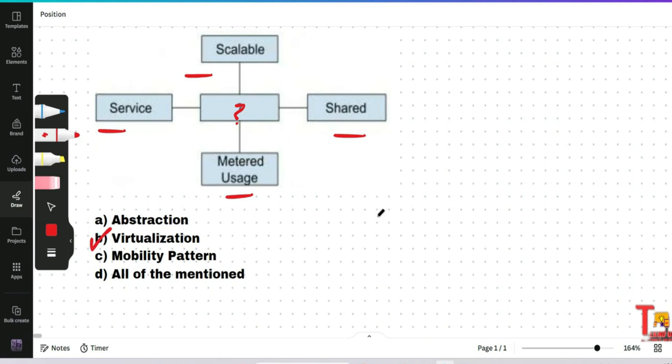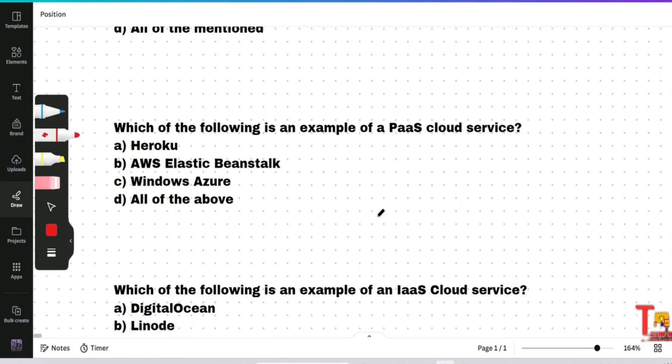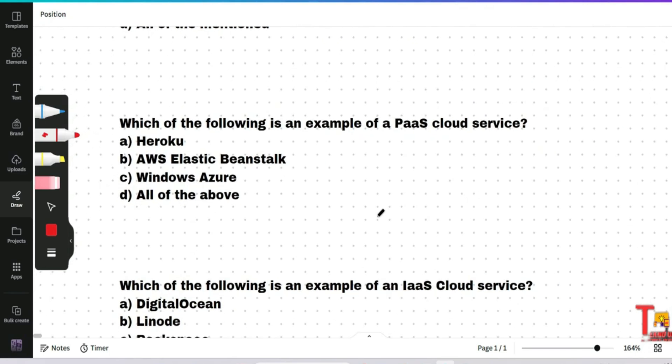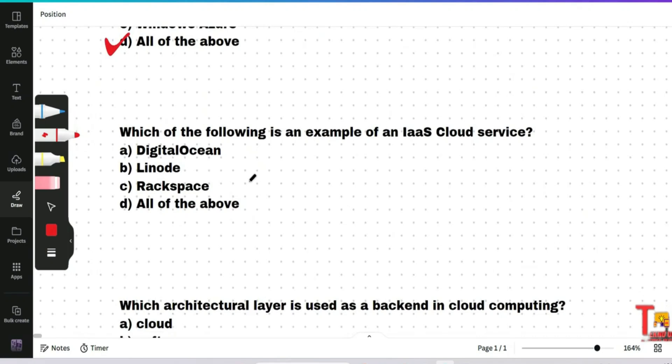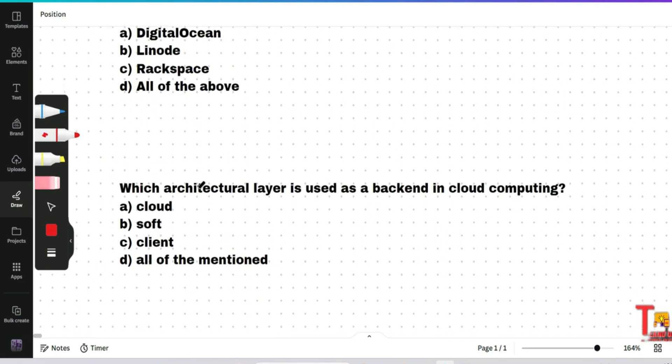Okay, the next question is which of the following is an example of PaaS cloud service? The answer will be all of the above: Heroku, AWS Elastic Beanstalk, Windows Azure. But the next question is which of the following is an example of an IaaS cloud service, infrastructure as a service? This will be a quiz question for you. Please pause and give me the answer.